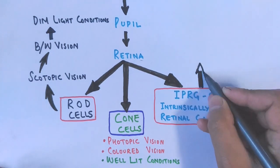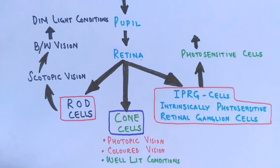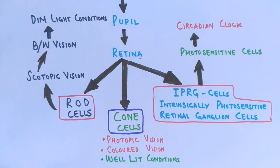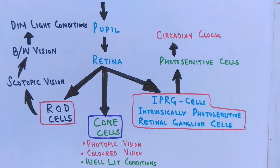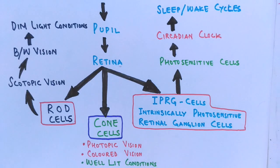The third cell type is intrinsically photosensitive retinal ganglion cells. These cells don't perceive vision; instead, they synchronize our body with light and dark cycles during day and night. This is driven by a circadian clock in our body called the circadian clock, which drives circadian rhythms. Notably, even blind persons can synchronize their actions to day and night via this circadian clock, because only rod and cone cells are non-functional in blind persons — the photosensitive retinal ganglion cells remain intact.